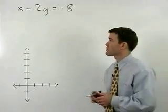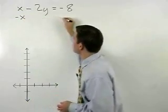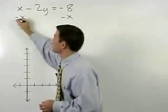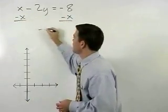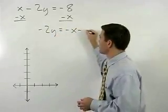So to start things off, let's subtract x from both sides of the equation to get negative 2y equals negative x minus 8.